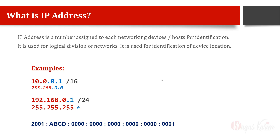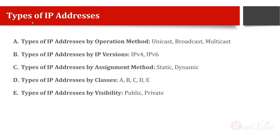It tells us which network a device currently belongs to. The examples of IP addresses are IPv4, written in dotted decimal notation along with a subnet mask, and IPv6, written in hexadecimal notation. We will see both of them.